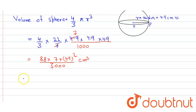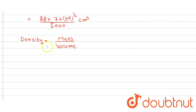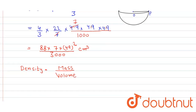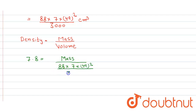But we have to find out the mass. So in order to find out the mass, we know that the formula is: density is equal to mass upon volume. So here we just simply put the value. The density of the ball is given as 7.8 gram per centimeter cube. So 7.8 is equal to mass divided by volume, which is 88 into 7 into 49 squared upon 3000.